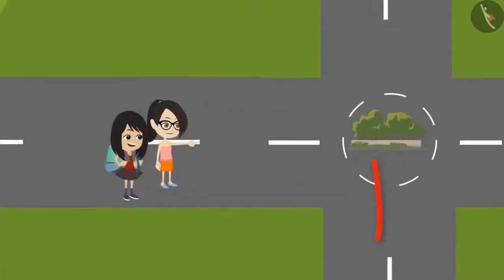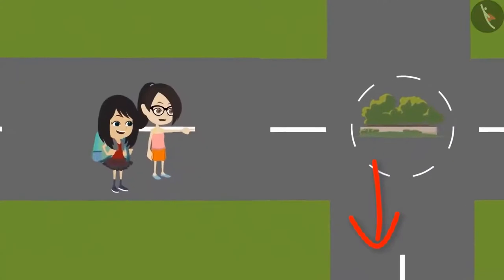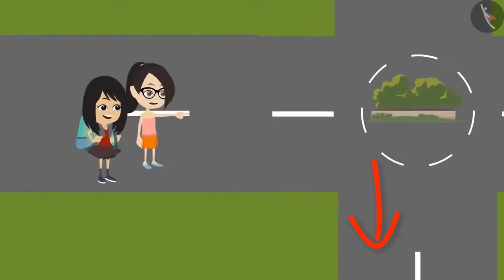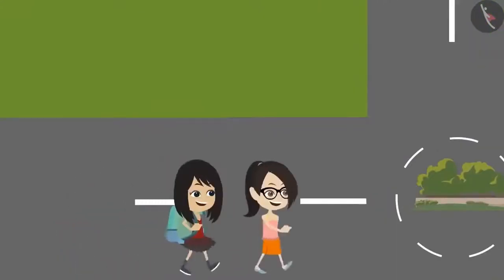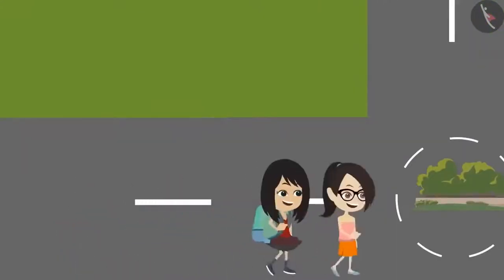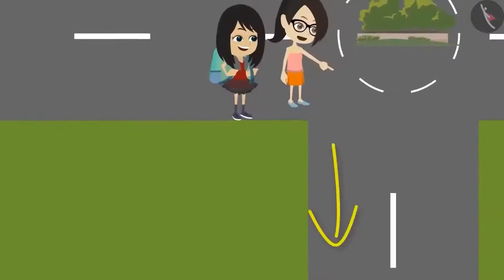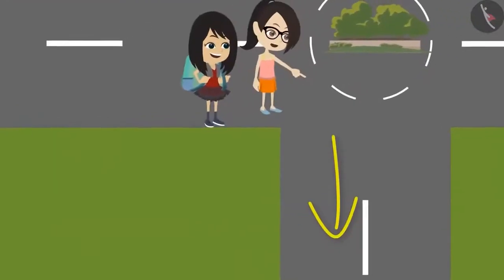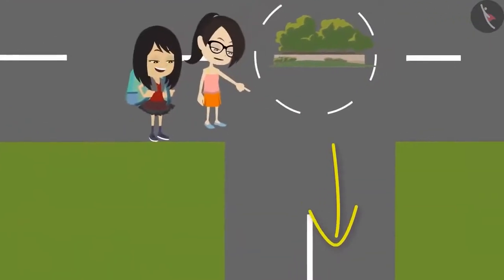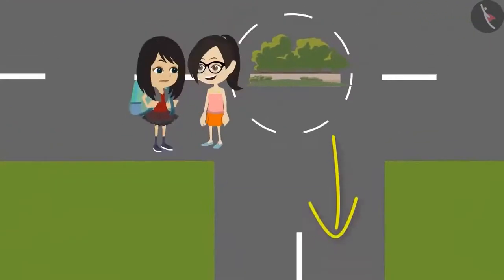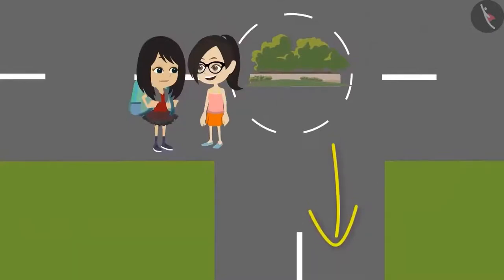Look, there is another road going towards right. This is the second right turn. We should take this way. Yes, now we are on the correct route. Let's take a right turn from here.